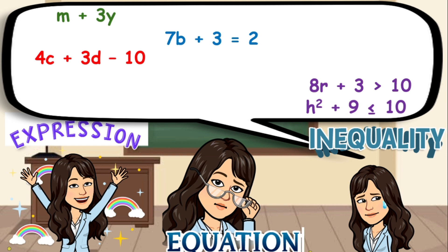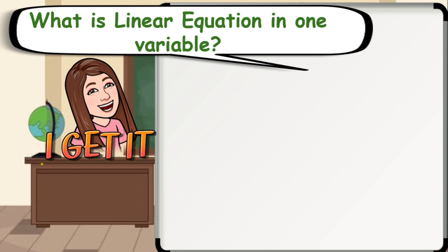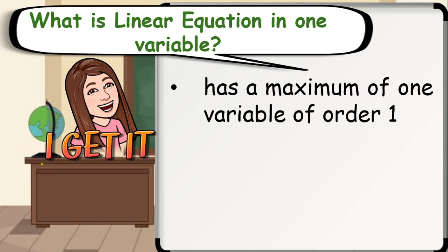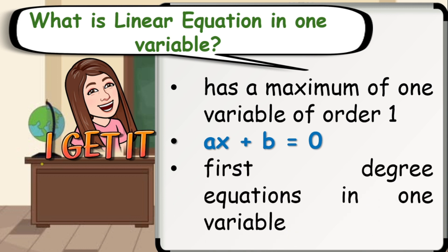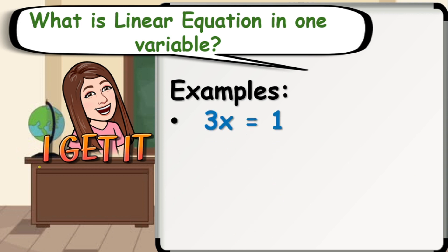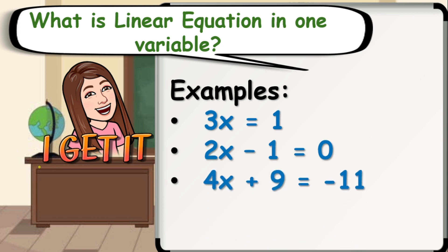What is a linear equation in one variable? A linear equation in one variable is an equation which has a maximum of one variable of order 1. The standard form is ax plus b is equal to 0, where a and b are real numbers and a must not be equal to 0. It is also known as the first degree equation in one variable and has only one solution. Few examples are: 3x is equal to 1; 2x minus 1 is equal to 0; 4x plus 9 is equal to negative 11.